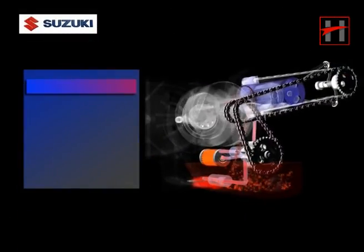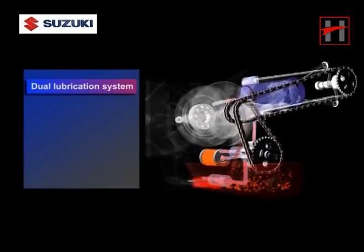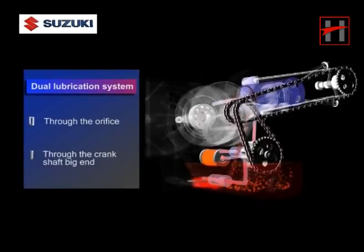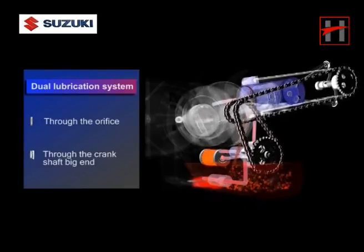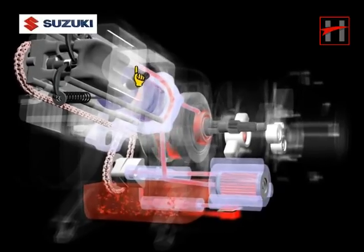In this way the piston and the cylinder has a dual lubrication system: one through the orifice and second from the crankshaft big end. Step 7: Oil from gallery C also enters gallery E provided along with the cylinder stud.